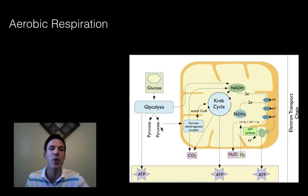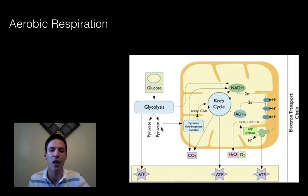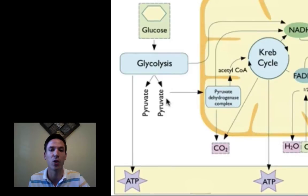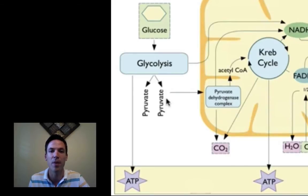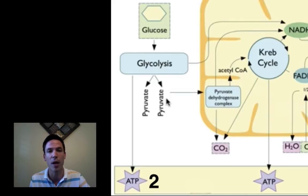Before we go into anaerobic respiration, let's recap aerobic cellular respiration. The first step was glycolysis — we took a glucose molecule and split it in half into two pyruvate molecules, or pyruvic acid. The main thing we focused on was that we got two ATP molecules out of this; we actually created four but two were used for the process, so we netted two.